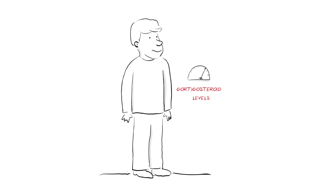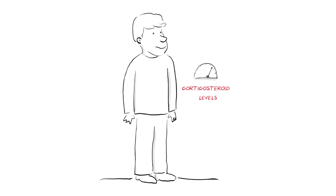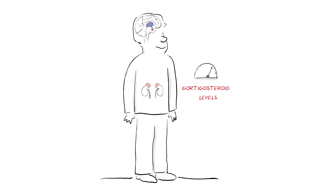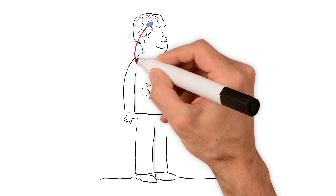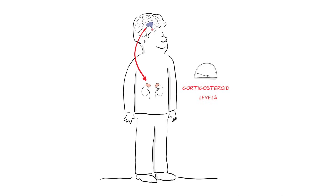This is particularly true for corticosteroids. The brain tries to control how much corticosteroids the adrenal gland makes by detecting the levels in the blood. If levels are low, a signal is sent to the adrenal gland to make more.